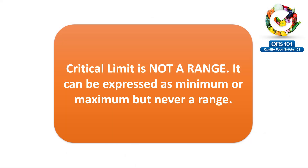This brings me to the second property of the critical limit: it is always a single value. It can be expressed as a minimum or a maximum, but never a range. For example, I cannot say my cooking temperature should be between 70 to 75 — it has to be a single value. I can say it has to be minimum 75, meaning above 75 everything is good but less than 75 is not. Similarly, I cannot say the chiller temperature for my CCP should be between 5 and 12 — that's a range and not acceptable because then you don't know when you deviate from the critical limit.